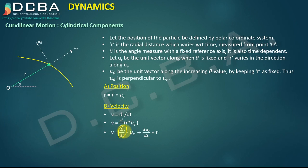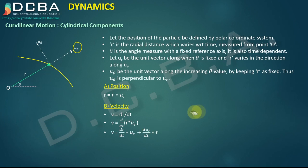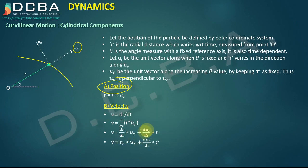Here, dr/dt is the radial velocity multiplied by unit vector ur. We need to find what dur/dt equals. The change in ur occurs when θ changes — if the particle fluctuates only along the radial direction, the direction of ur does not change. The direction of ur only changes when θ changes by dθ.